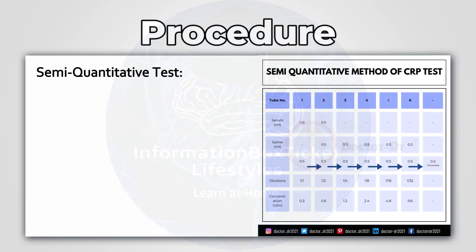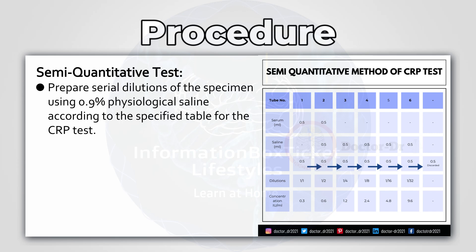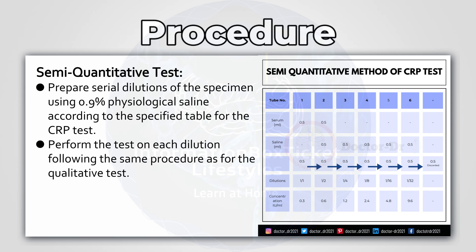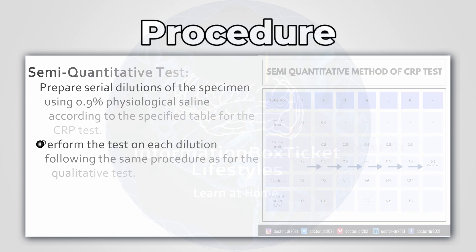Semi-Quantitative Test. Prepare serial dilutions of the specimen using 0.9% physiological saline according to the specified table for the C-reactive protein test. Perform the test on each dilution, following the same procedure as for the qualitative test.